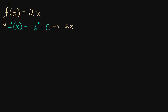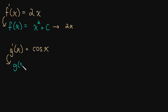Let's do another example of finding an antiderivative. Say g prime of x is equal to cosine of x. What is the antiderivative of g prime of x — meaning what's the function we took the derivative of to get g prime of x? Well, this is just sine of x. When you take the derivative of sine, you get cosine. But we can't forget to add plus c, because there could be any constant there, and when we take the derivative that constant disappears and we just get cosine x.